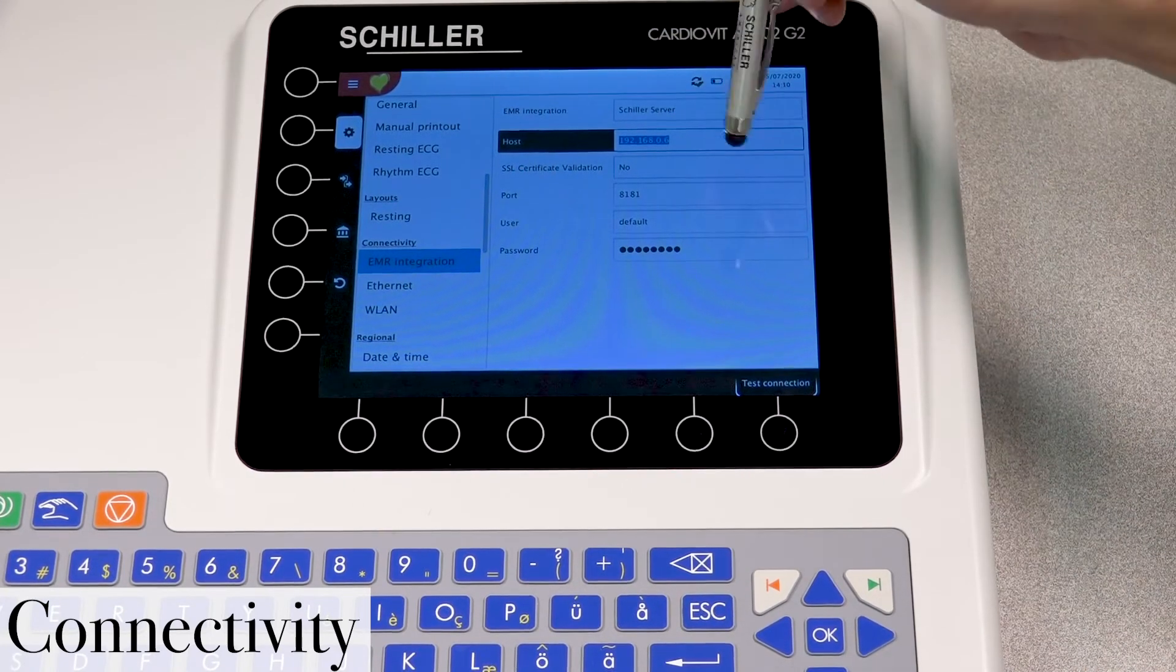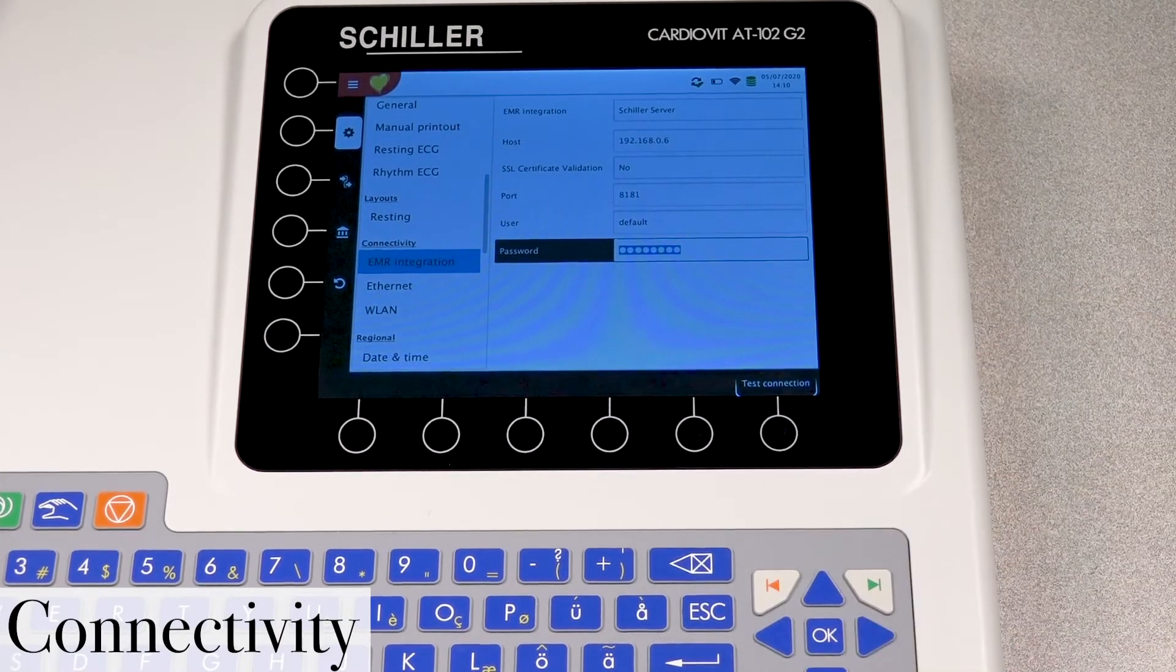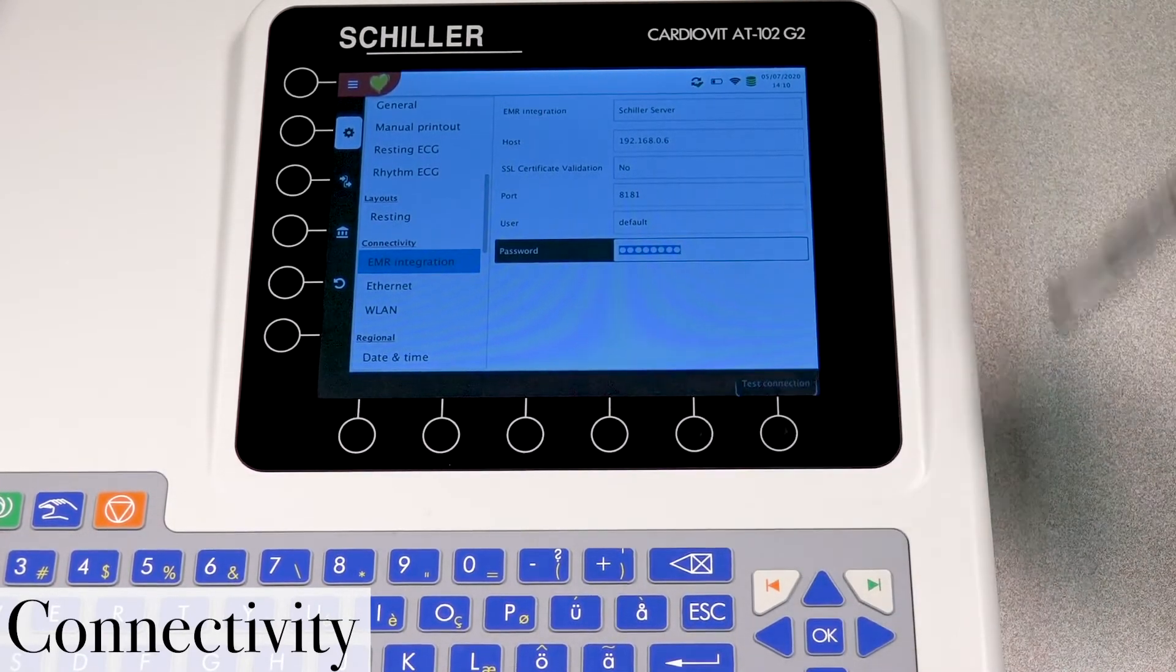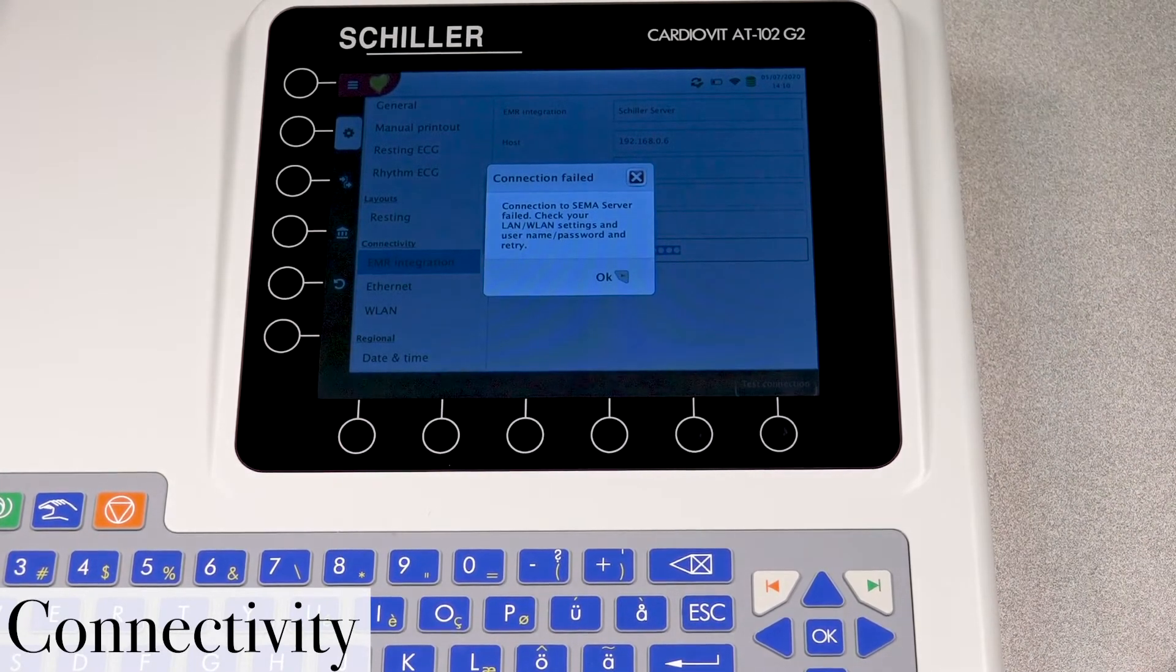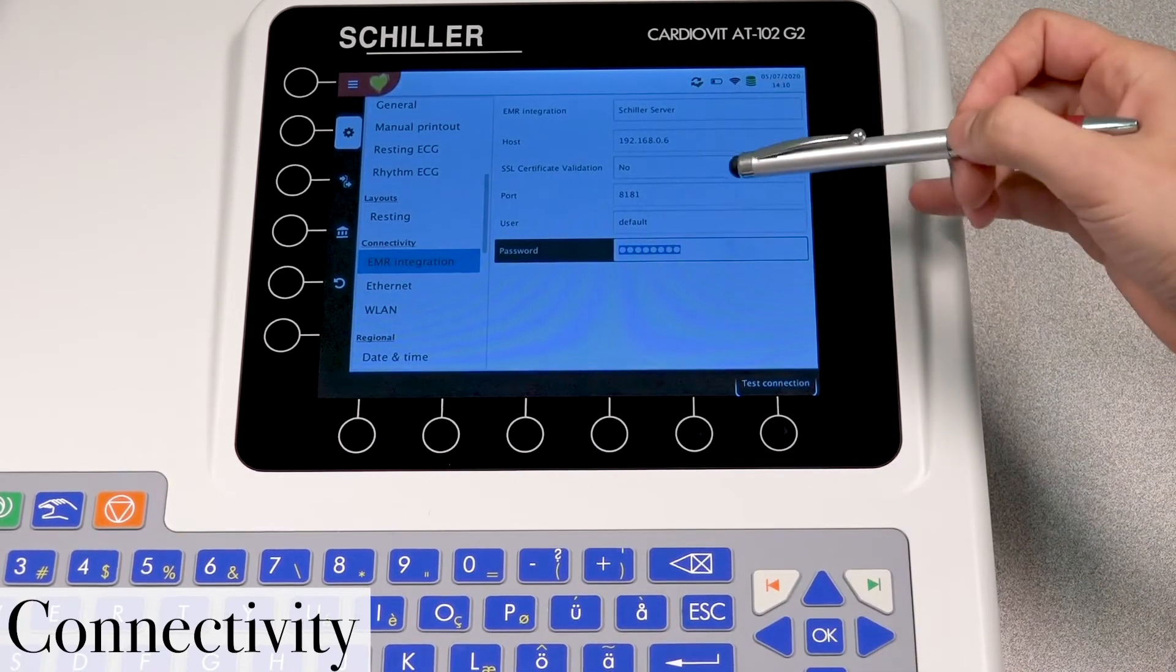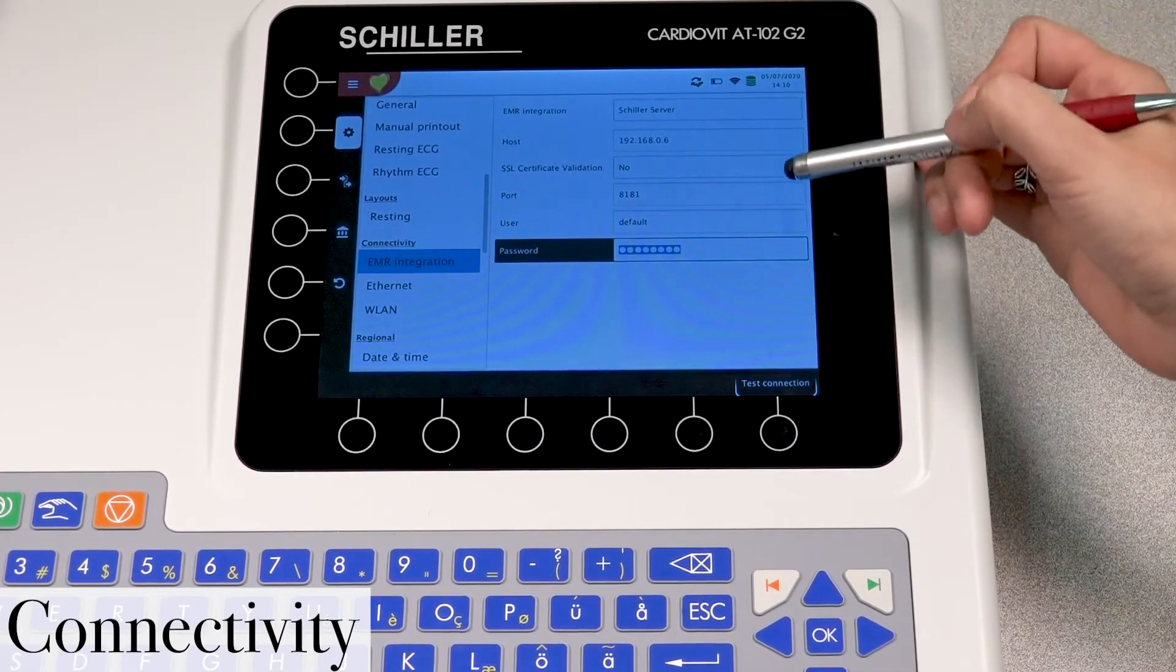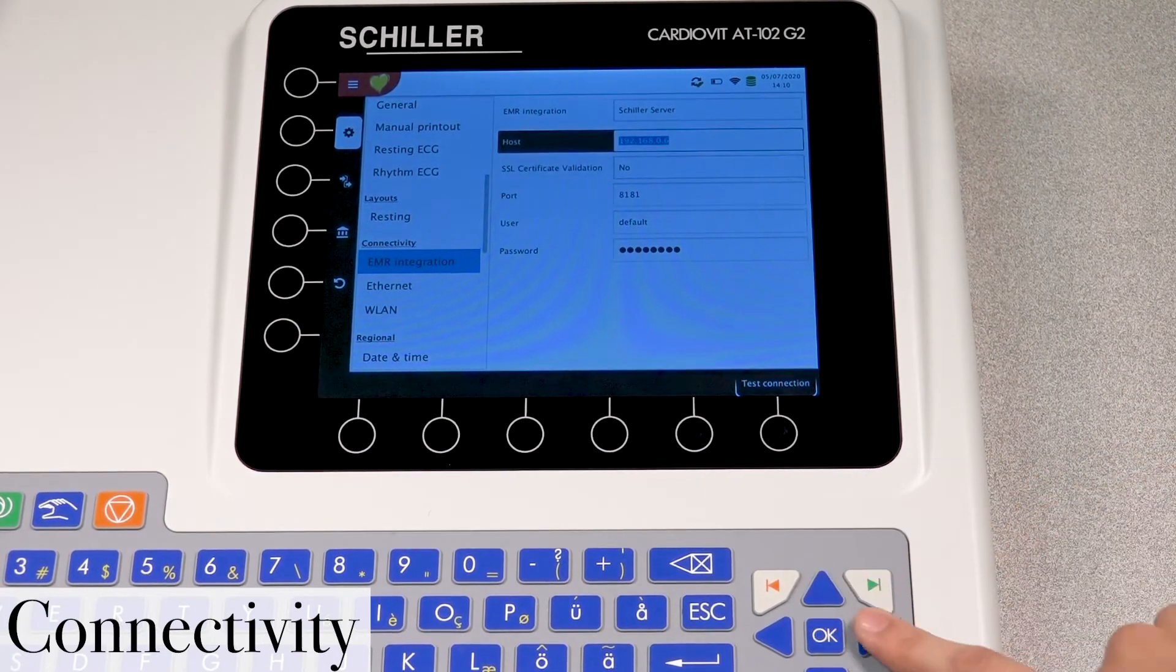So we went ahead, entered the IP address. And our password is entered. Let's go ahead and test the connection. Testing the connection. Well, the connection is actually still failing. So let's go ahead. We're going to press OK, get out of here. And then we have to look again on our information and ensure that everything is inserted properly.